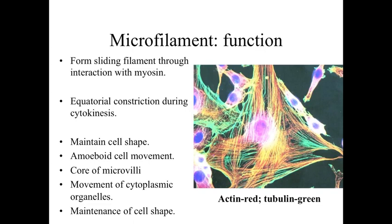Actin is also involved in equatorial constriction during cytokinesis — when the cell is dividing and pinching in at the equator, pulling on actin filaments like a purse string causes the membrane to collapse down and separate into two distinct cells. Actin filaments are also important for cell shape, forming the core of microvilli, and are involved with the movement of cytoplasmic organelles.